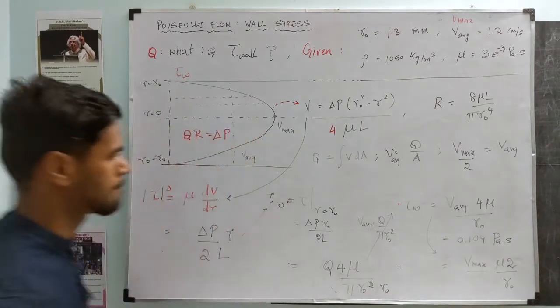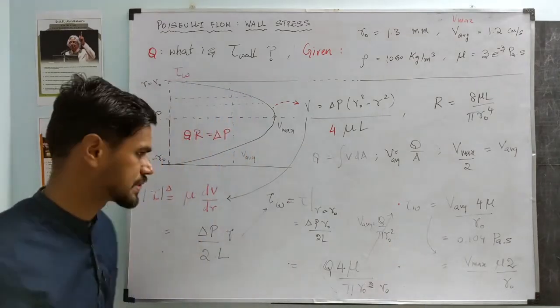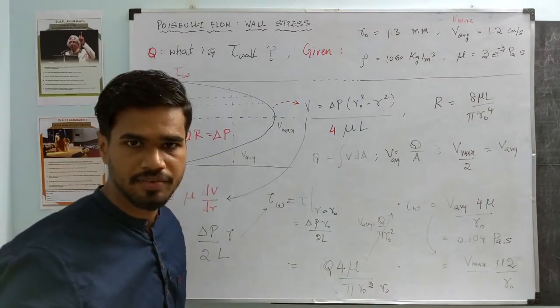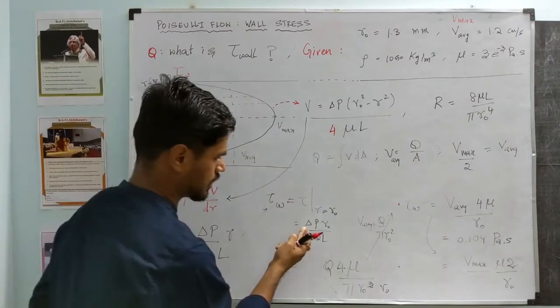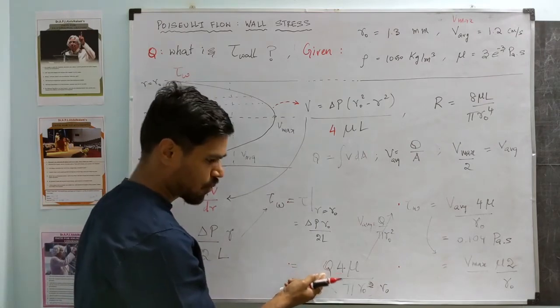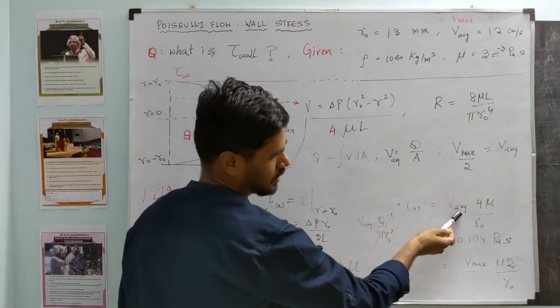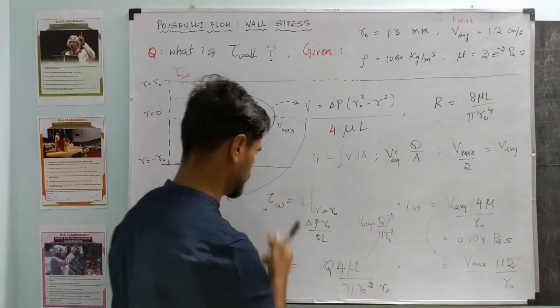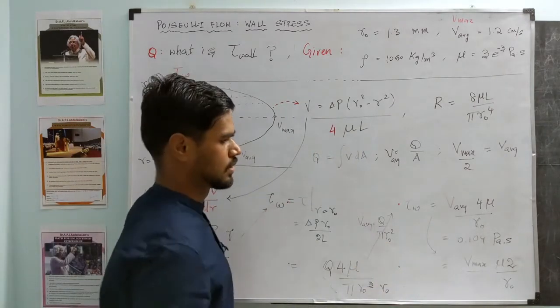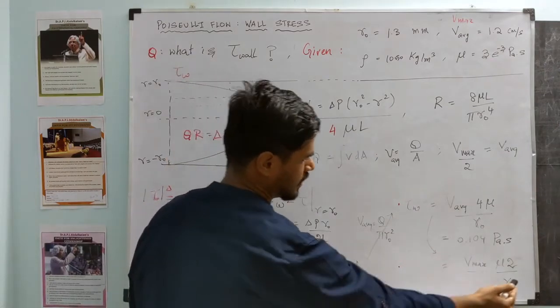So with that we answered our original question. And in the process we notice the given information can be given in slightly different forms, right? Say we are given either change in pressure and length, you can still find what the wall shear stress is. You may be given information of flow and radius, you can still go ahead and find the wall shear stress. In this problem we were given the average velocity and radius, and we derived it using the function starting with the function for velocity. Similarly, they might also give what the maximum velocity is and ask for wall shear stress.